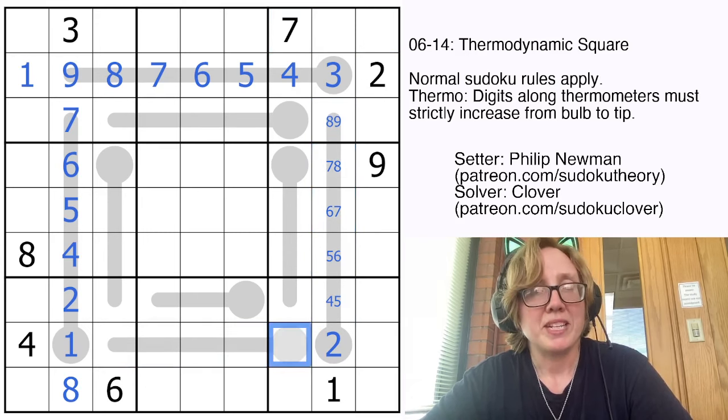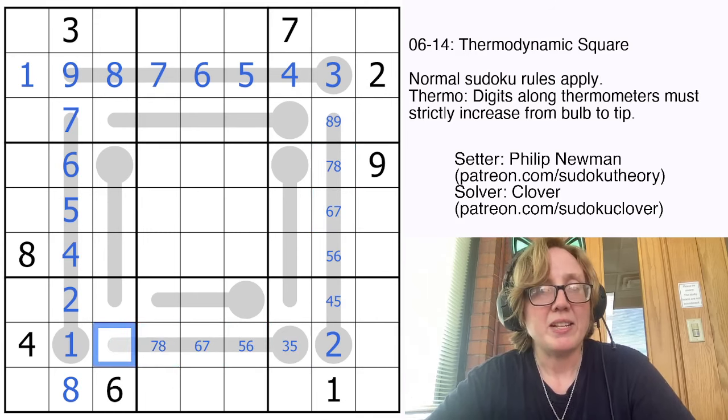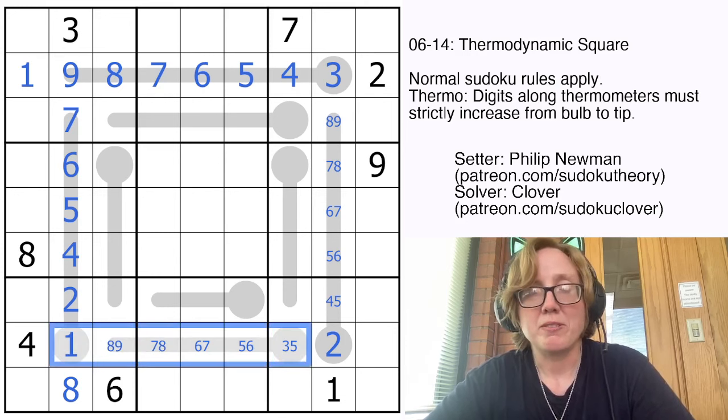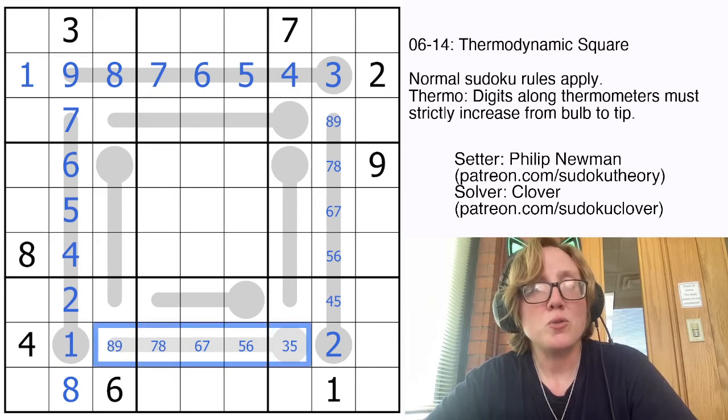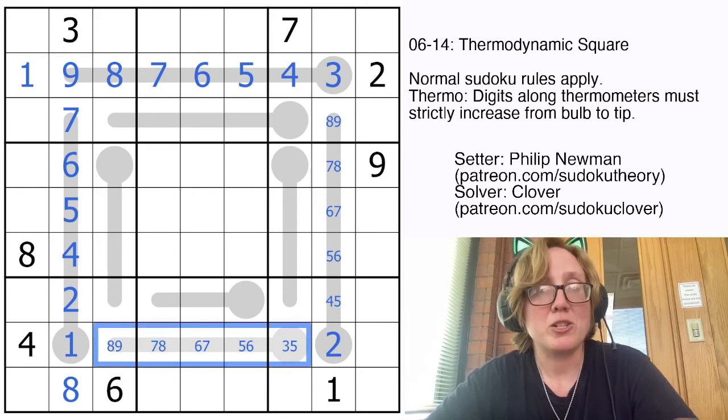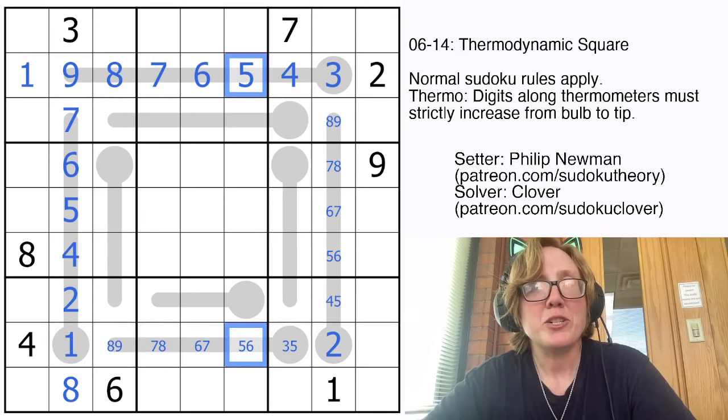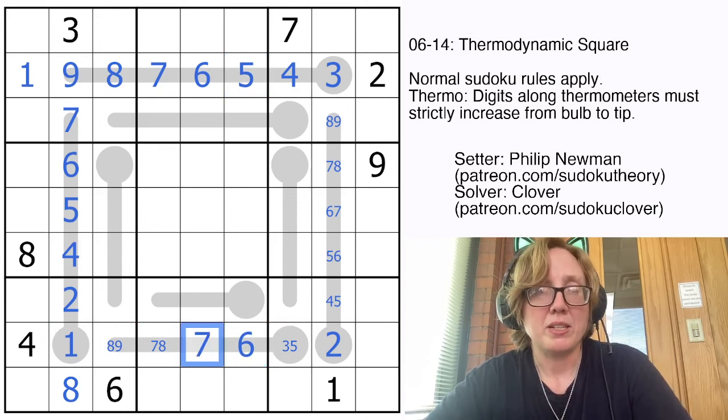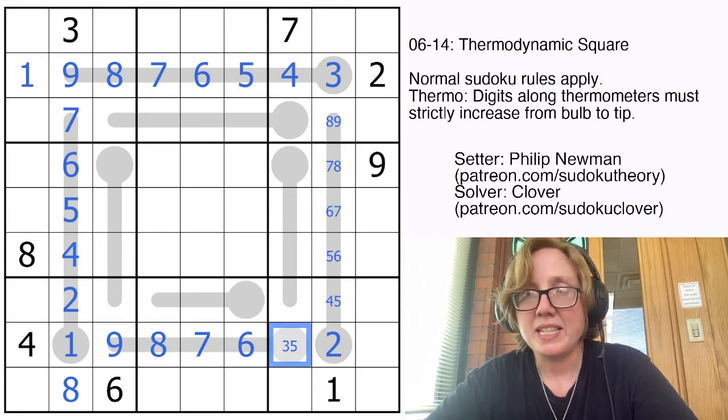This thermo now only has 1 degree of freedom, so that will be a 3 or 5, 5 or 6, 6 or 7, 7 or 8, 8 or 9. I'm pencil marking 2 digits into each possible position along the thermometer. This can't be a 5 because of the 5 in the column, so that will be 6, 7, 8, 9 in that order.